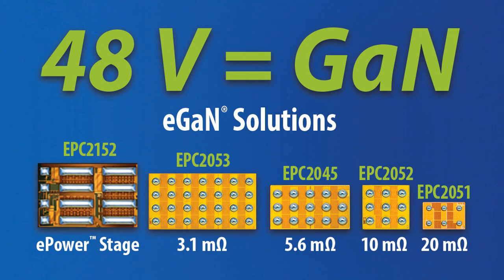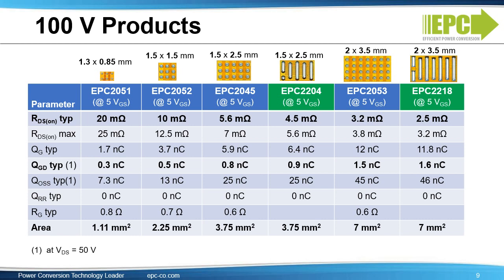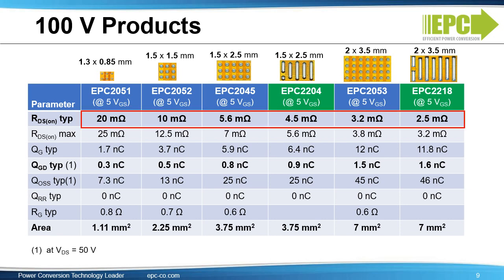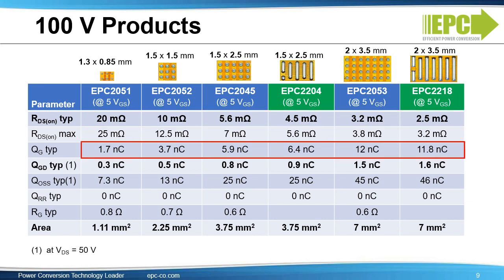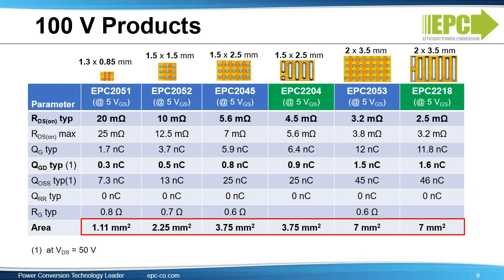Now let's look at the specific portfolio for drones. All the applications we mentioned require a 48-volt input power, and this requires 100-volt devices — the sweet spot for GAN technology. Here you see a full range of 100-volt EGAN FETs from EPC, with RDS-ON ranging from 20 milliohms to 2.5 milliohms. Gate charge is very small, from 1.7 nanocoulombs to 11.8 nanocoulombs. QGD is also very small for very low switching losses, and QRR is zero. The device area is ultra-small, from 1 mm² up to 7 mm². The BGA devices, except for the EPC-2051, can all nest so that the same layout can accommodate different FETs to allow easy and flexible upgrades for efficiency or load current changes.